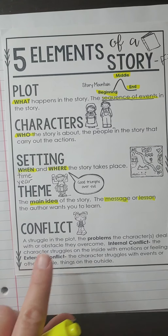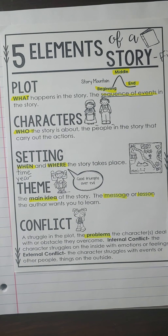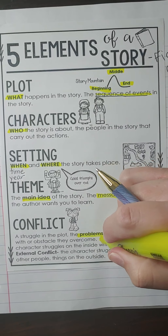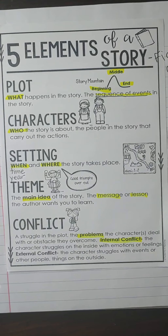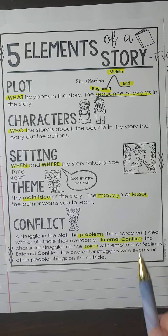The last part is the conflict in the story, which you've probably heard called the problem. We talked last week that if every story was happy, happy, happy, you wouldn't want to read it — it's not interesting if everyone gets along. So we want a story with some conflict or problem. There are two types of conflicts. There's internal conflict, which means inside — when I'm struggling with my own emotions or feelings, like should I do my homework or should I play outside? That's an internal conflict.